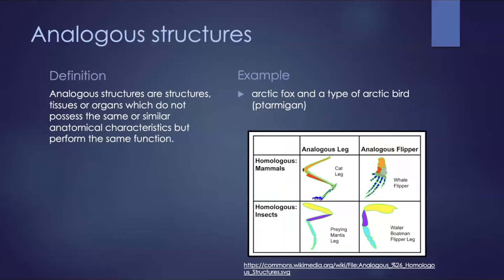Analogous structures are structures, tissues, or organs which do not possess the same or similar anatomical characteristics, but perform the same function. These structures did not evolve from one common ancestor, but from another independently. They evolved differently because the organisms lived under identical conditions or encountered similar selection pressures. In unrelated species, analogous structures are structures that are identical because they evolved to have the same function, not because they descended from a common ancestor.